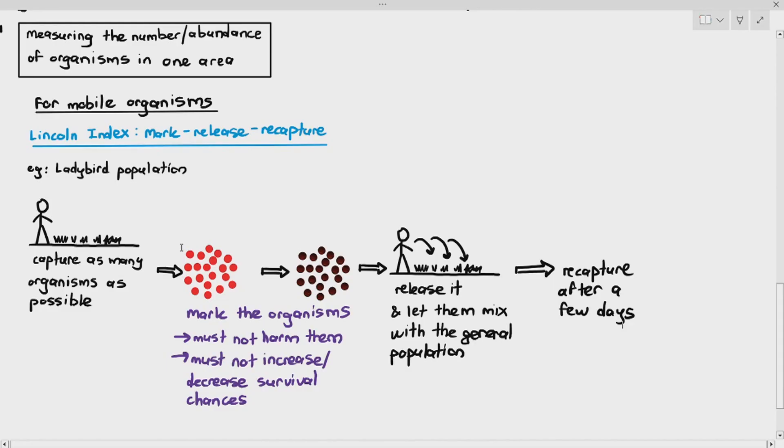So once you've marked the ladybird in an ethical way, you release them back into the wild and let them mix with the general population for a few days. At least a few days. And then you recapture the ladybirds. When you're recapturing the ladybirds after a few days, you do not just recapture the marked ones. You recapture as many as possible. You are not going to discriminate. When you recapture as many as possible, obviously some of the ladybirds are unmarked because they were not captured in the first time. And some of the ladybirds are marked because you captured them and marked them earlier. So this is how the second capture looks like.